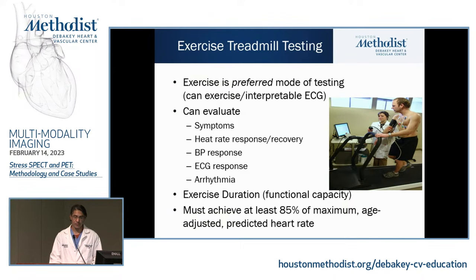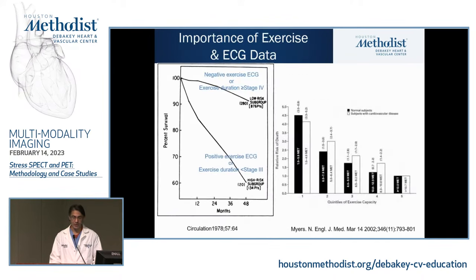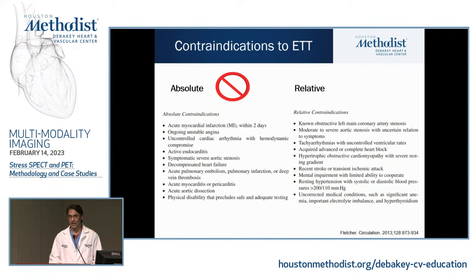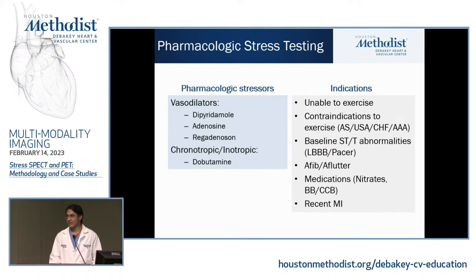Exercise is very important — you get a lot of useful information. One of the most important pieces is functional capacity: knowing how much someone can exercise predicts their risk. These studies show the worse your ability to exercise, the greater the risk. If you are going to exercise somebody, you must get them to 85% peak heart rate; otherwise you lose sensitivity for the test. There are also contraindications — patients who look sicker, with active heart failure or MI, you're not going to want to stress.